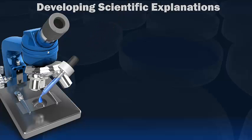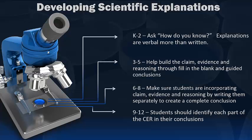So let's look at how we, in PROSPER, can implement this. So in K-2, we can start by asking, how do you know? So we're going to have more of a verbal than written conclusions in K-2. In 3-5, we can start helping build the claim evidence and reasoning. We can start with fill in the blank, guided conclusions, because it's going to take them time to learn this skill.